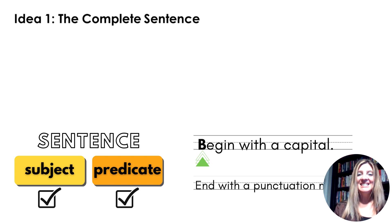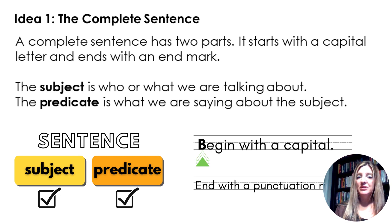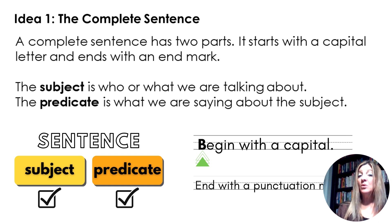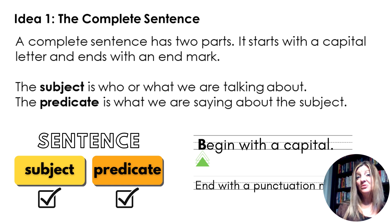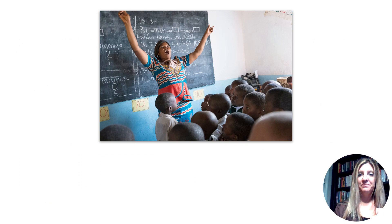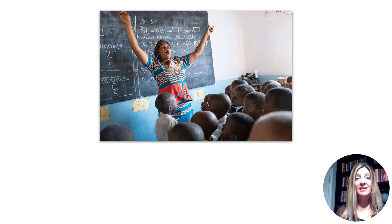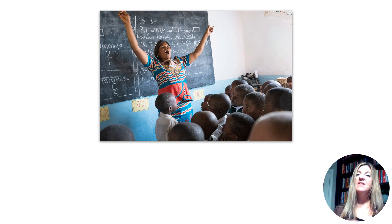A complete sentence has two parts; it starts with a capital letter and ends with an end mark. A subject is who or what we are talking about, and the predicate is what we are saying about that. So every sentence we write or speak should have these four things. With students, I say, let's practice — what is this a picture of? We're speaking in complete sentences and writing in complete sentences. I want this to be very, very simple: give me a sentence that just has who we're talking about and what we're saying about it.